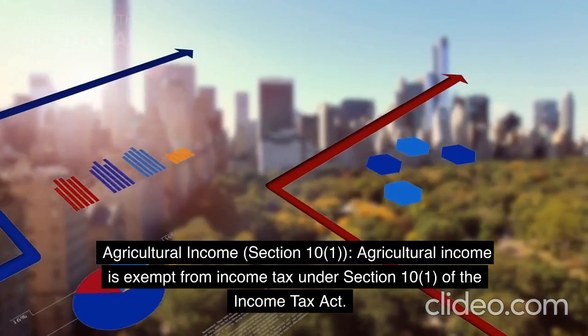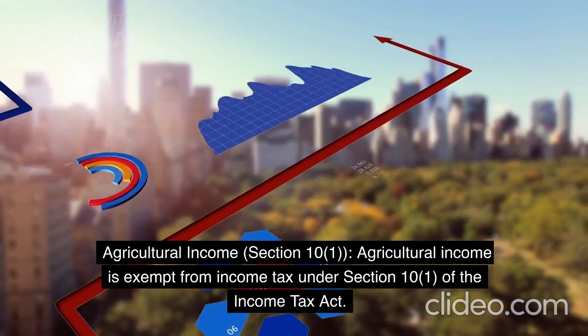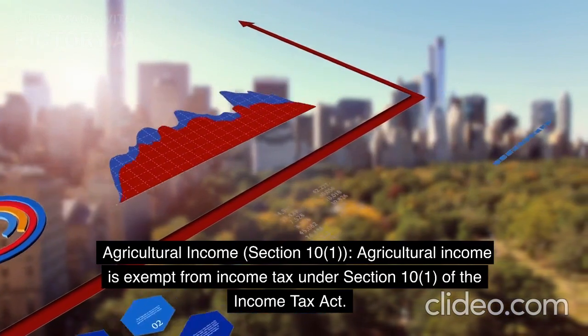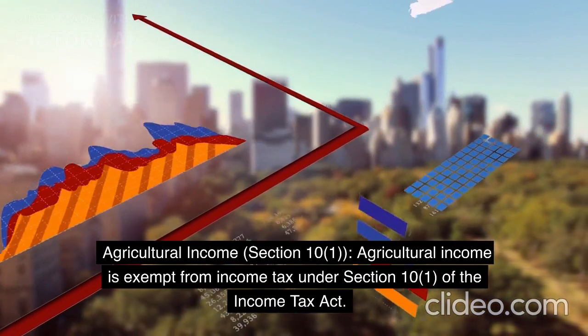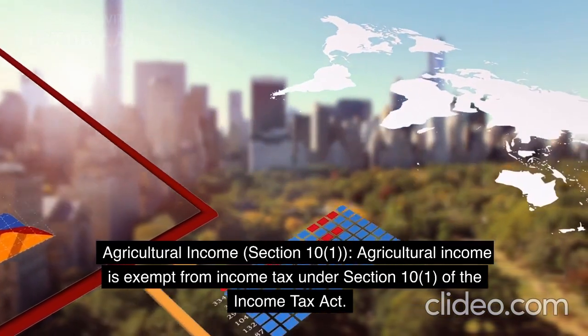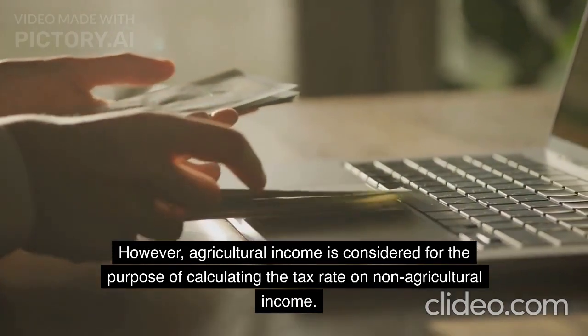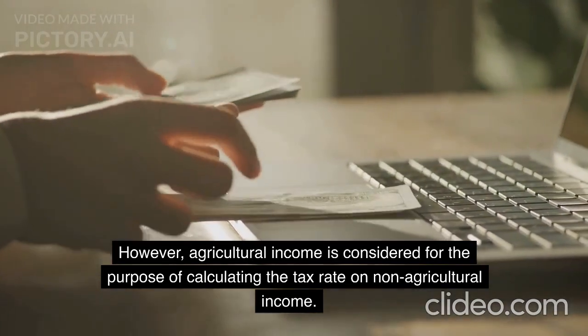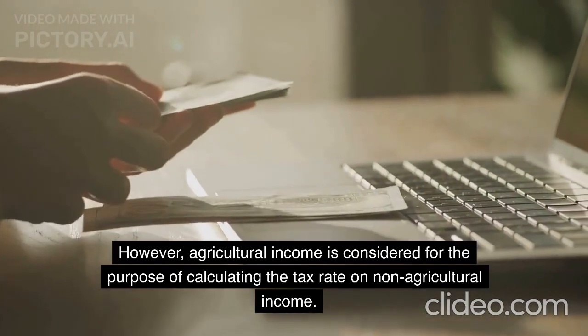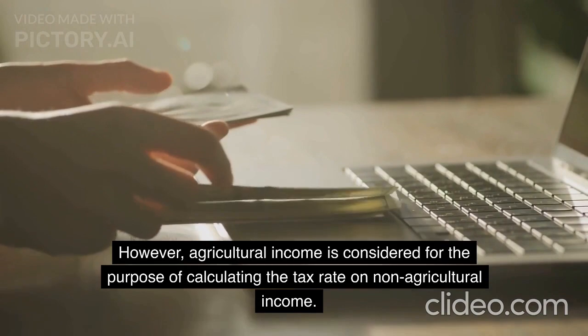Agricultural Income — Section 10(1). Agricultural Income is exempt from income tax under Section 10(1) of the Income Tax Act. However, Agricultural Income is considered for the purpose of calculating the tax rate on non-agricultural income.